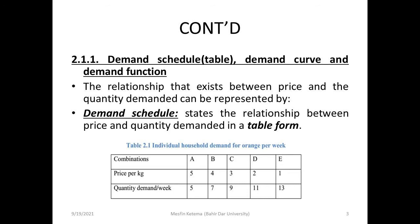Points A, B, C, D, E each represent a relationship between quantity demanded and price in the demand schedule table.